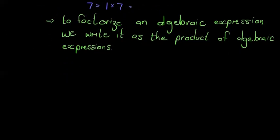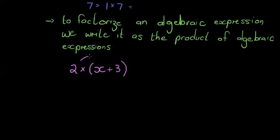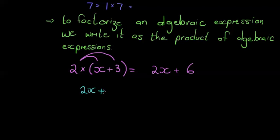Let me do this the opposite way around. Say I had a 2 multiplying an algebraic expression. When I multiply an algebraic expression I put it in brackets — that shows I'm multiplying everything by 2. This is called the distributive property. In the end, 2 times x is 2x and 2 times 3 is 6.